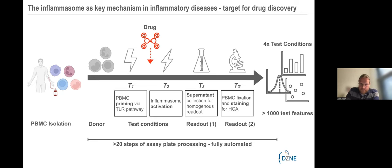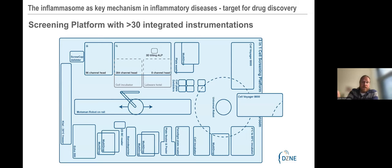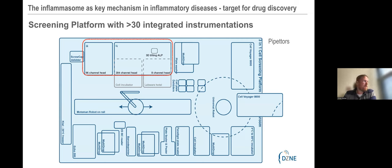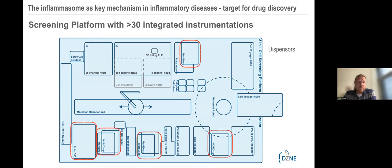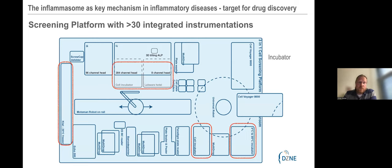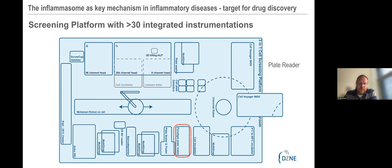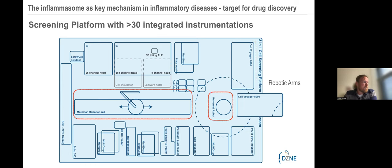In our lab, we have a special environment where we fully automate more than 20 steps of sample processing quite reliably. From each well we extract more than 1000 test features that we can analyze. We have a special screening platform — a very complex one — with different pipetters integrated: 96-channel head, 384-channel head, 8-channel heads, i5 and i7. We have various dispensers, an Echo integrated for compound dispensing, all the incubators needed, a plate reader for homogeneous readouts, and state-of-the-art high content screening imagers — the Cell Voyager 8000.